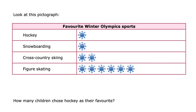Let's look at another pictograph. This one is about favorite winter Olympic sports. It's great that they have it labeled with a title, and they have each of the different sports labeled along the side, and they've used pictures to show how many people liked the different winter sports. The question is: how many children chose hockey as their favorite? The correct answer is one child.